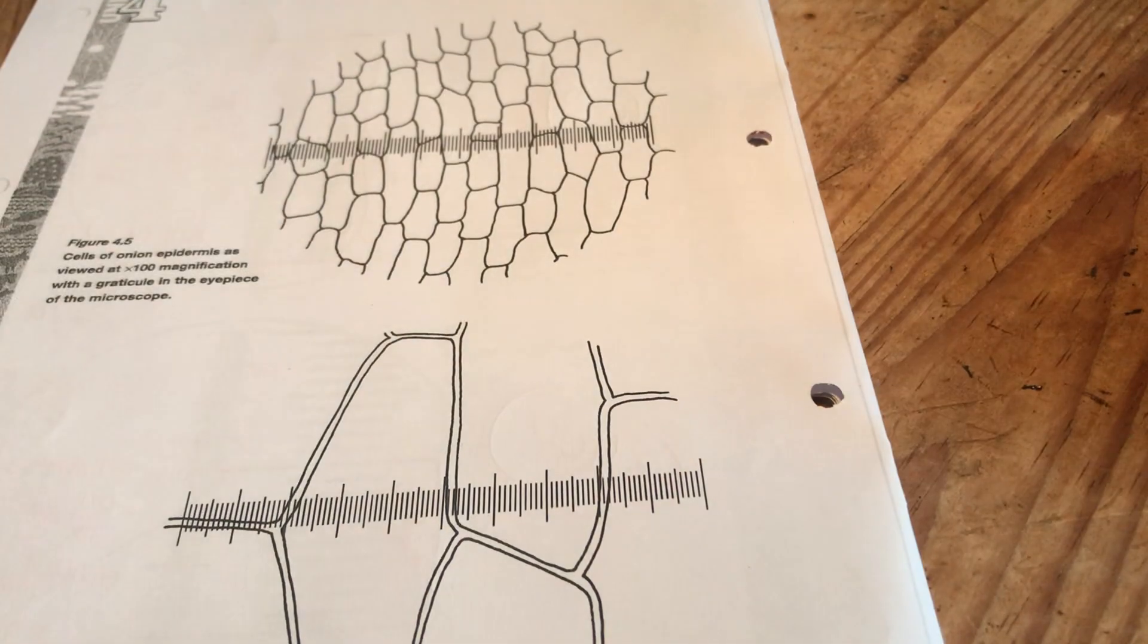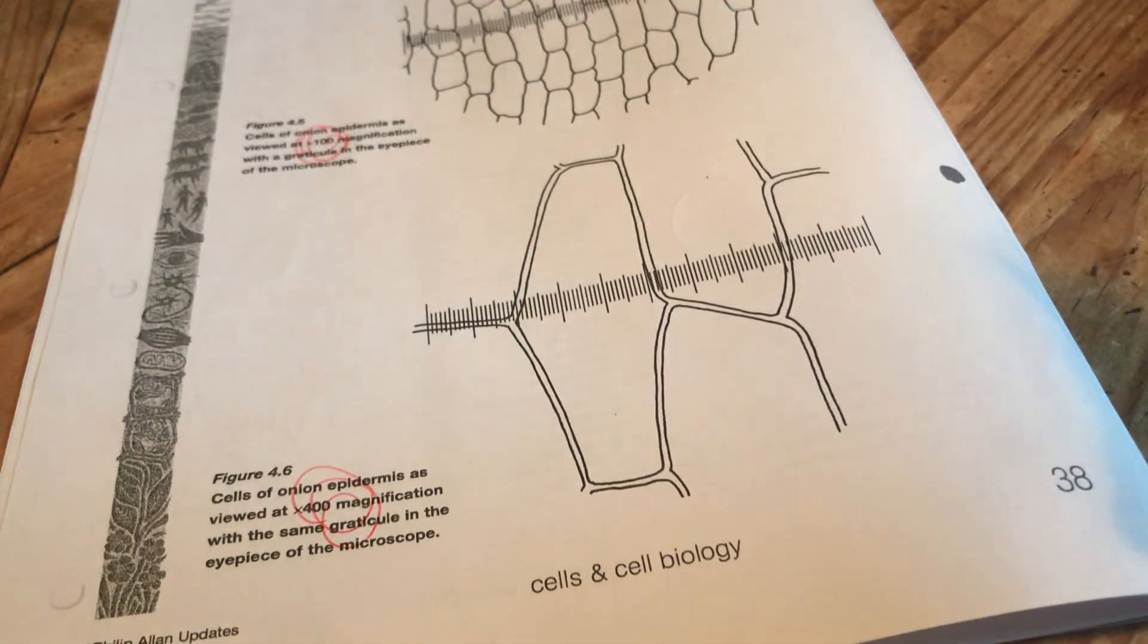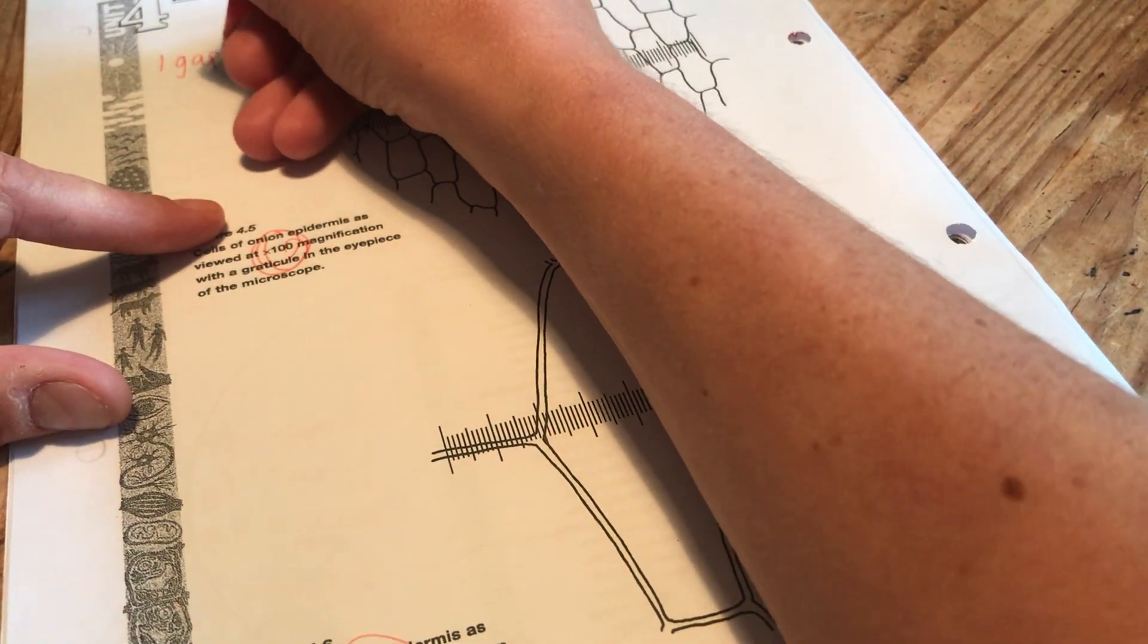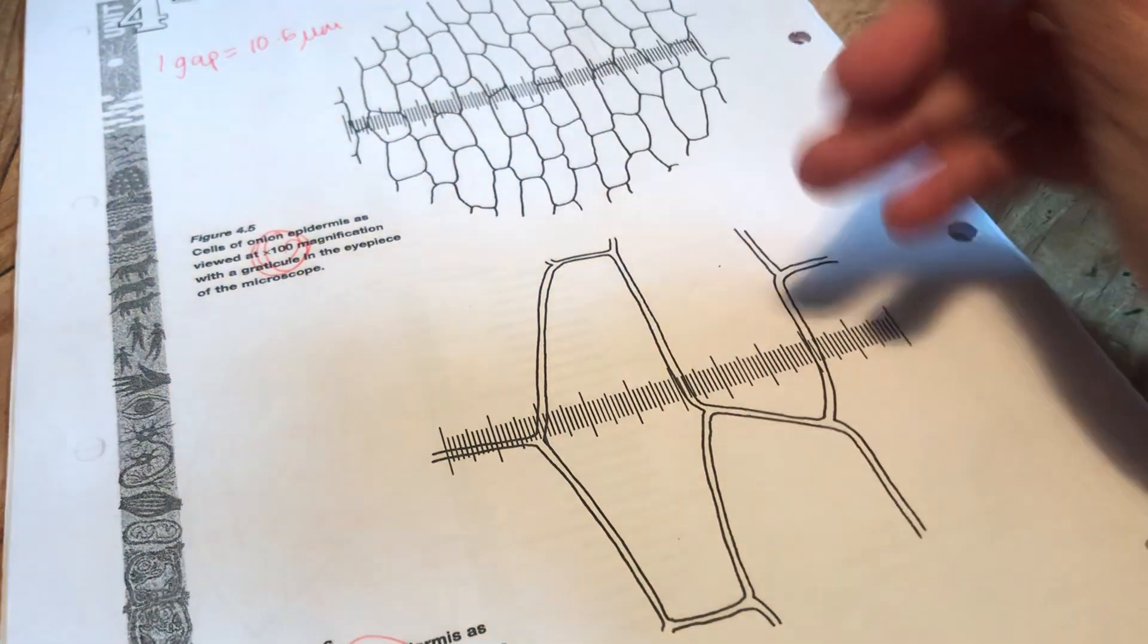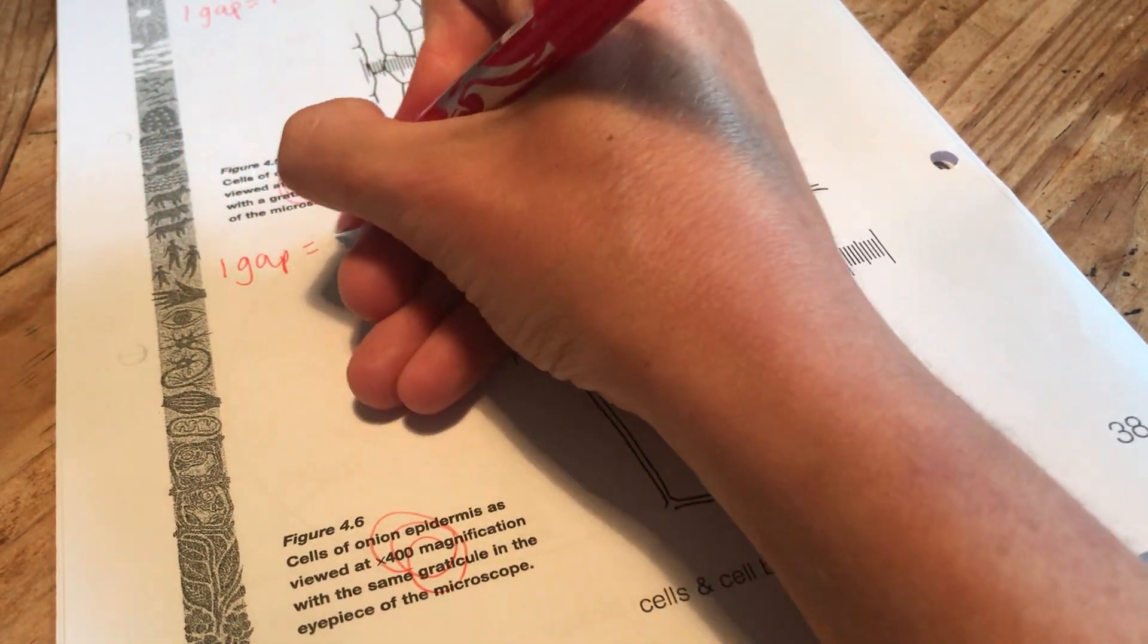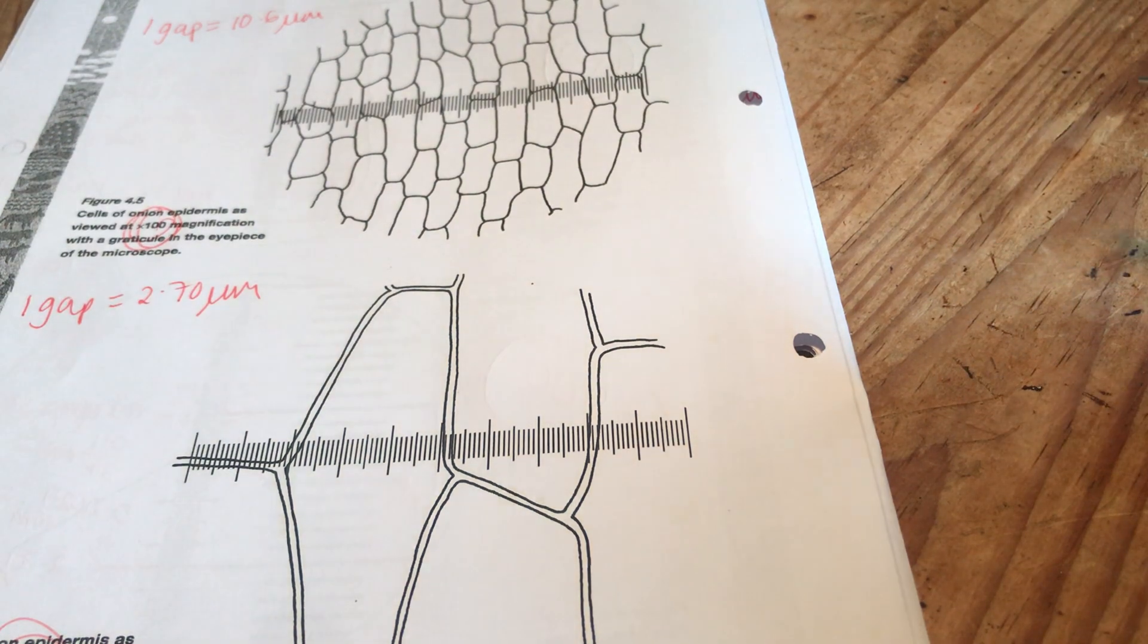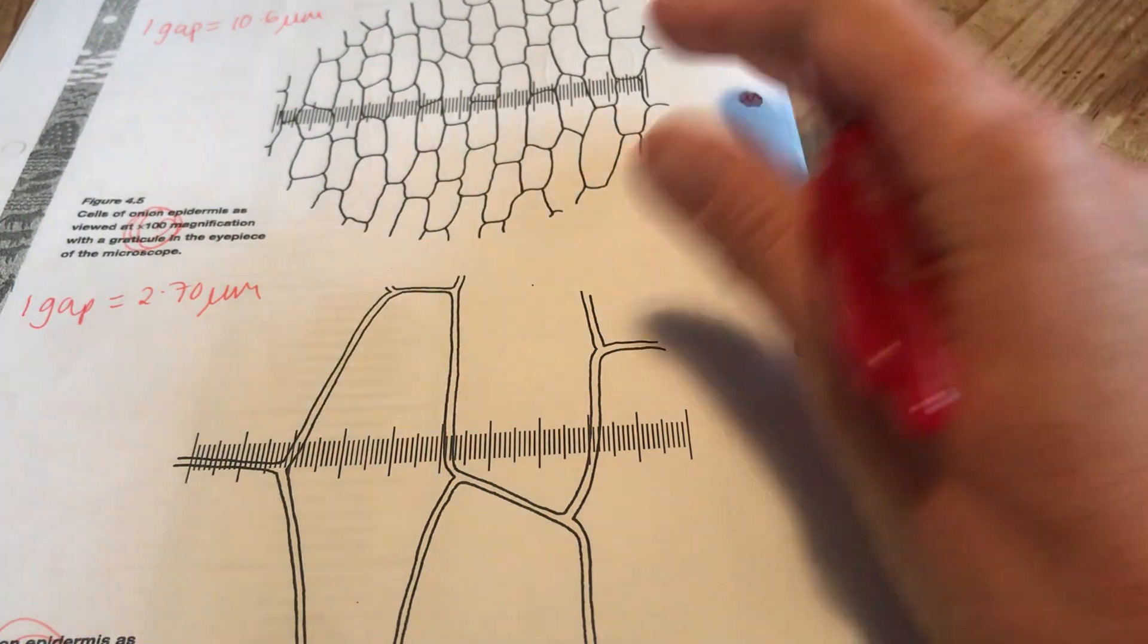So we need to do the width at 100 times and a width at 400 times. So we need some facts to start with. I need to recall at times 100 and times 400 how big those gaps were. So I think we said at times 100, one gap was worth, looking on my other sheet here, 10.6 micrometres. And I think we said at 400, one gap is worth 2.7 micrometres. Now are we asked for a mean here? We are aren't we? Calculate the mean width of one cell. So we should do a couple and take an average or we do the whole length and do an average that way. So there's two options.